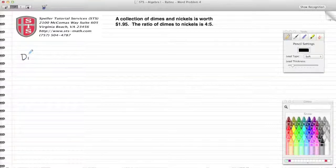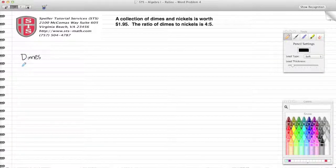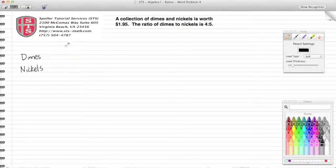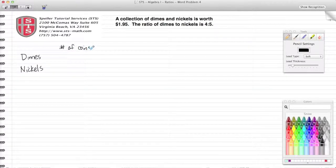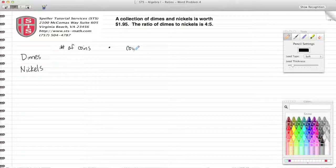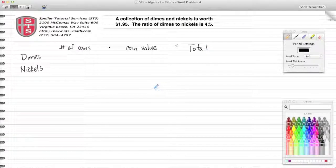All right, let's begin by making a chart. Start off with dimes and then nickels. Our first heading is going to be the number of coins, we're going to multiply that times the coin value, and that is going to give us some total.